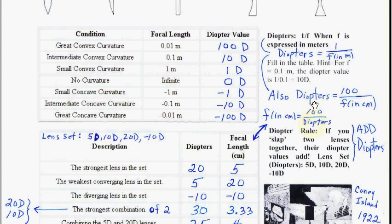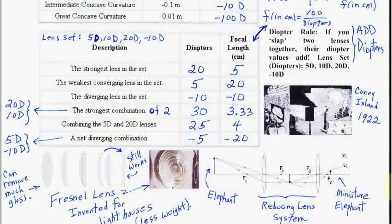The key rule: when you slap two lenses together, you add the diopters. You can't add focal lengths — you get nonsense. You have to add the diopters. Also, you can always swap diopters and F using the formula: if diopters = 100/F(cm), then F(cm) = 100/diopters.